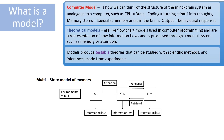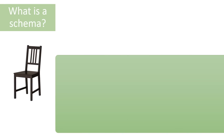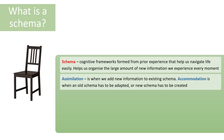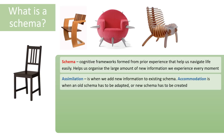A schema is a framework we put together based on previous experience, and these frameworks help us go through life more easily. The schema organises a large amount of information for us. We might have a schema for a chair — we know what it's for, we can sit on it, support our weight, and generally sit on it in the same way. If we see a new type of chair designed in a slightly different way, we add this information to our original idea of what a chair is. Adding information onto a previously existing schema is called assimilation.